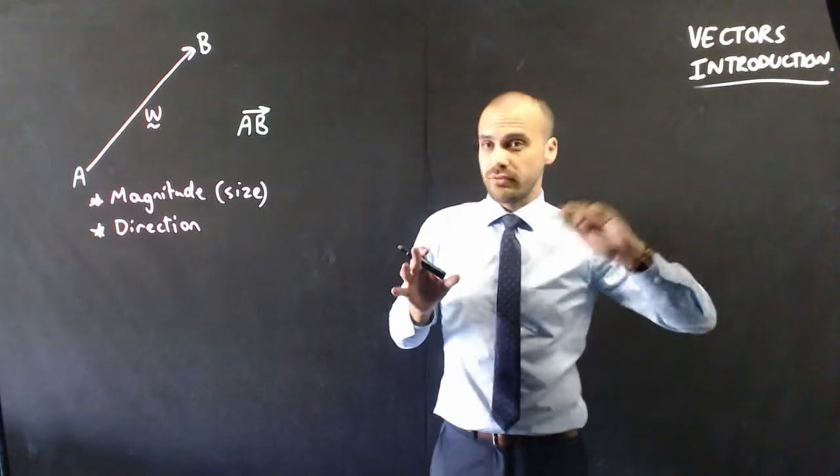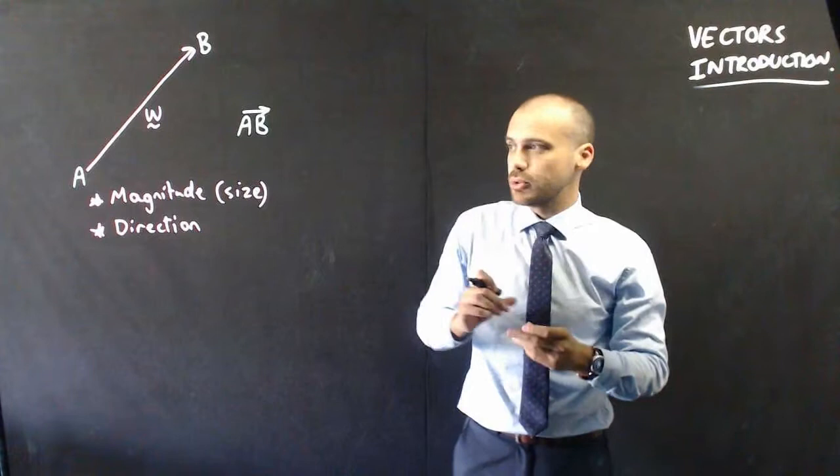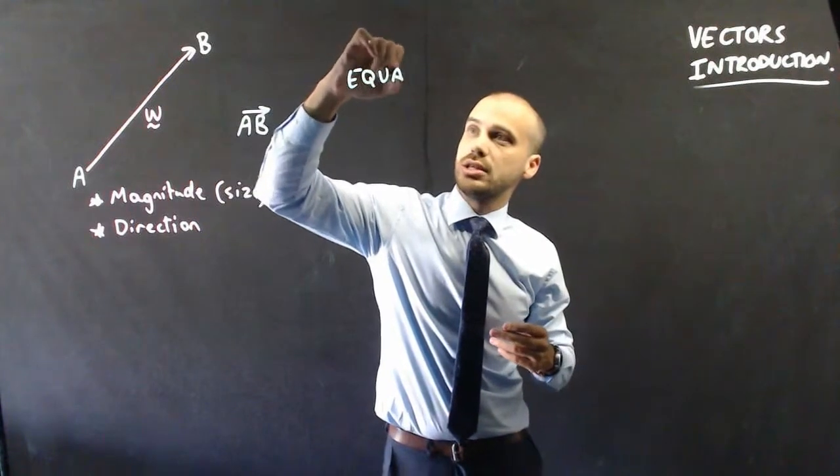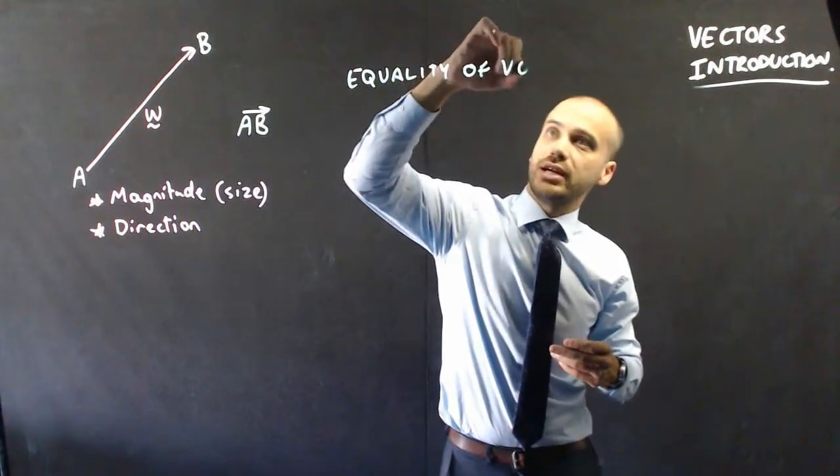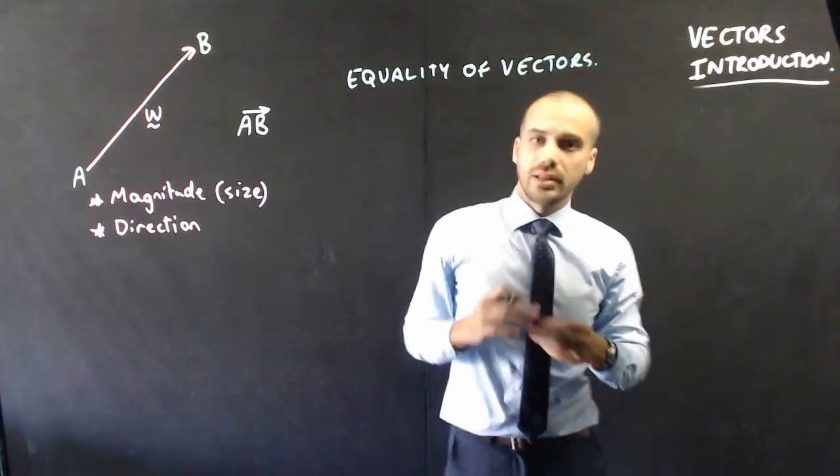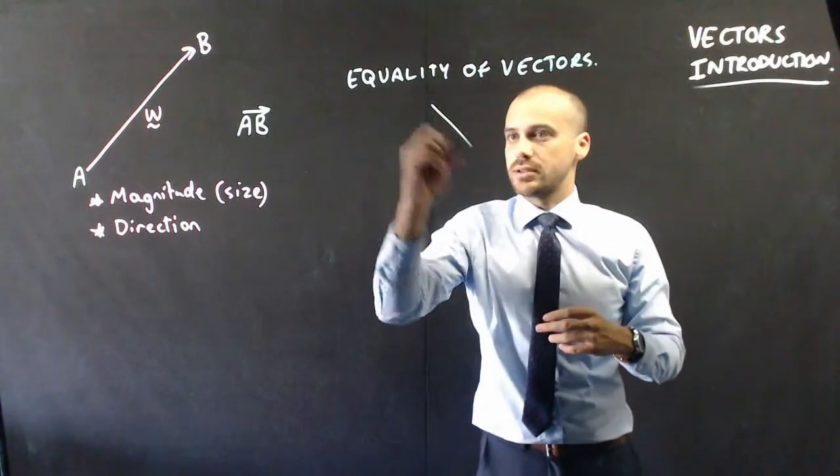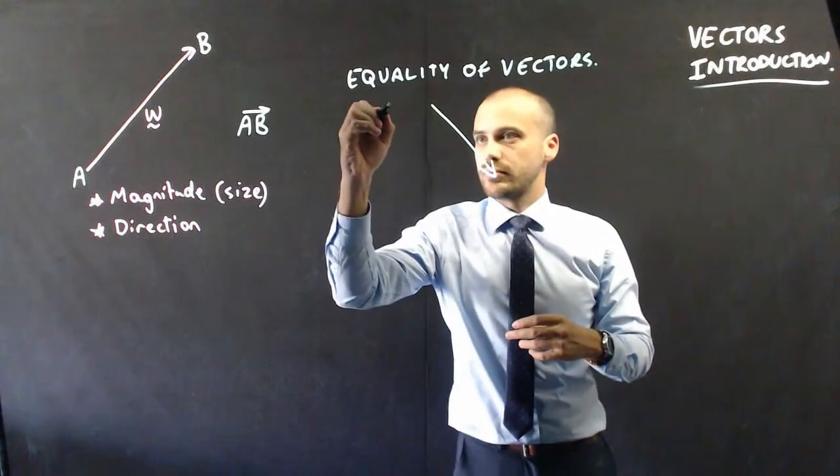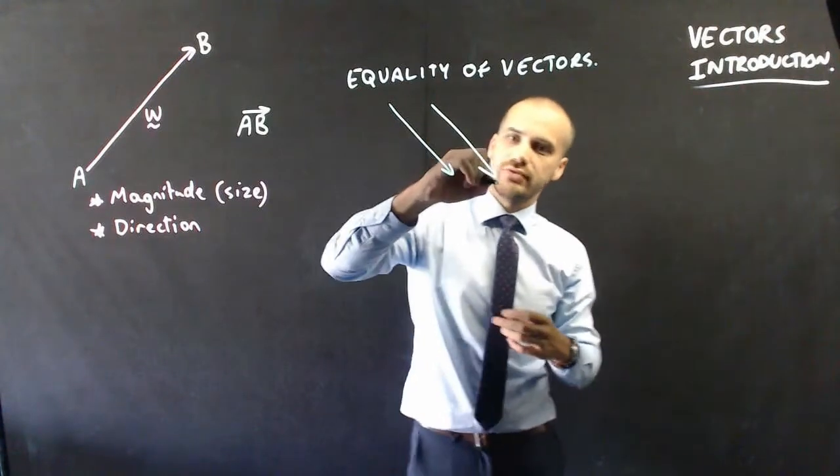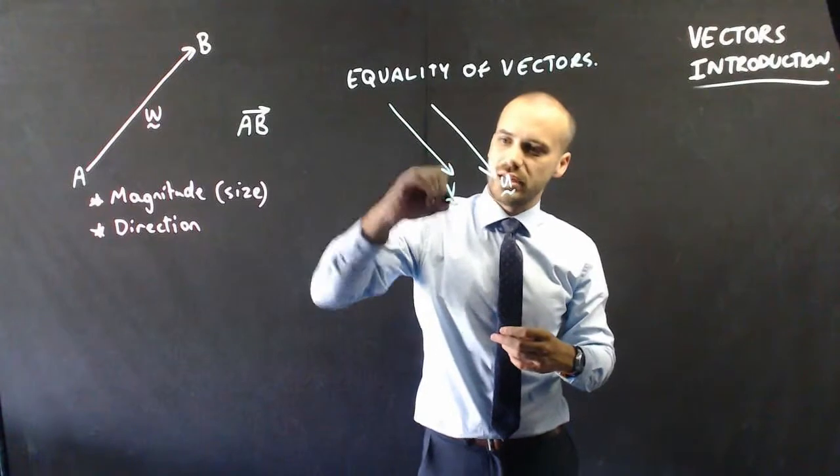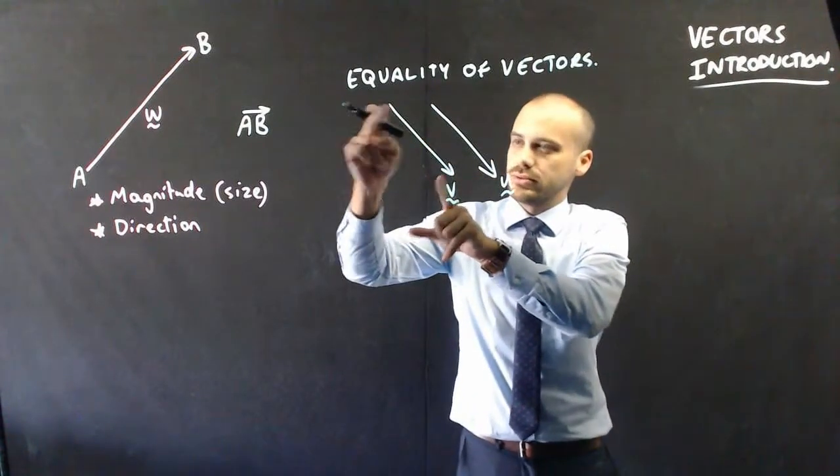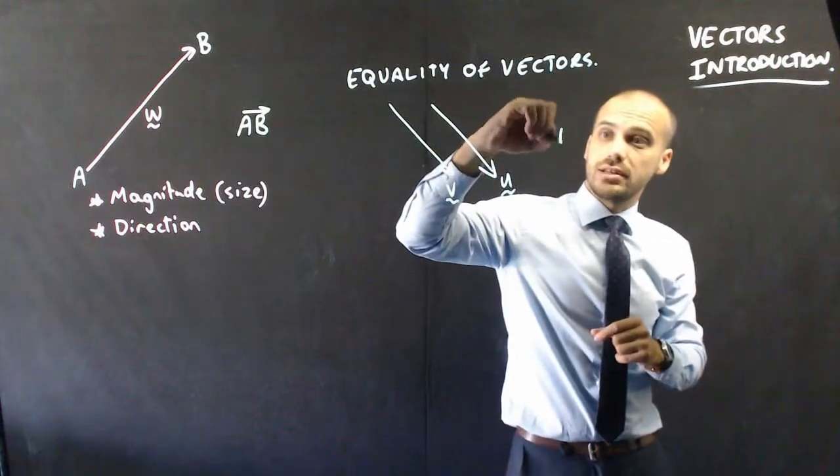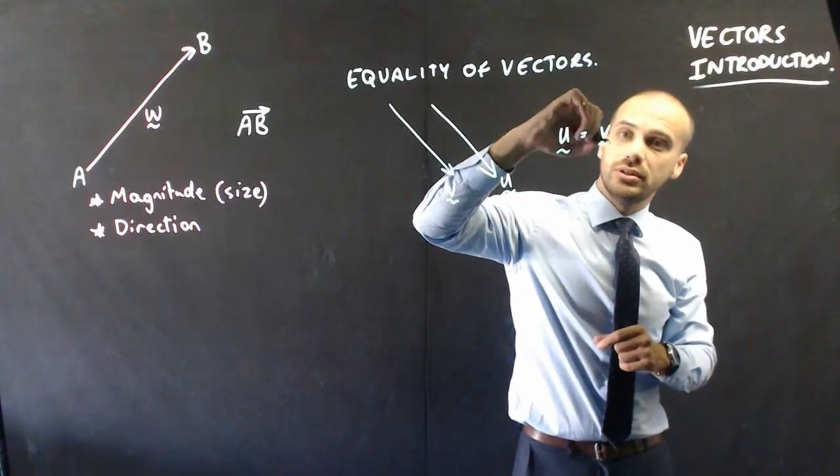That's pretty much all I want to talk about with vectors, but I just want to harp on this point a little more about how two vectors are equal and how they're not. If I talk about equality of vectors, let me show you two vectors. I'll call this vector U and this vector V. Now, they're the same length and they're moving in the same direction. Therefore, I can say that vector U is equal to vector V.